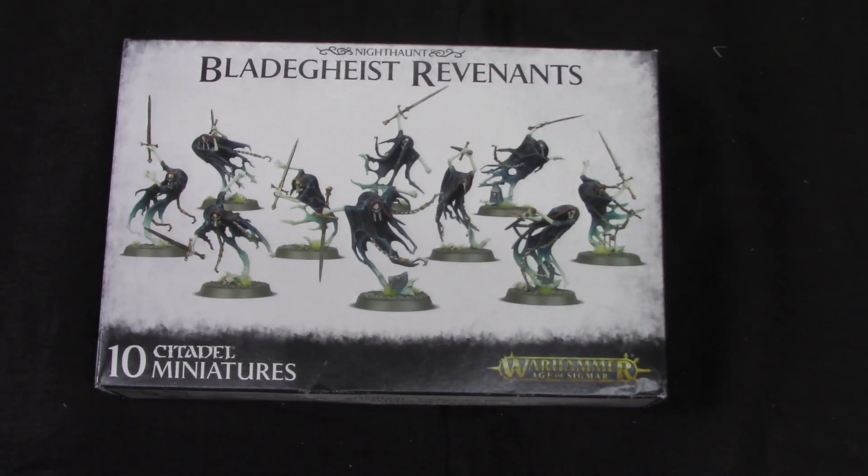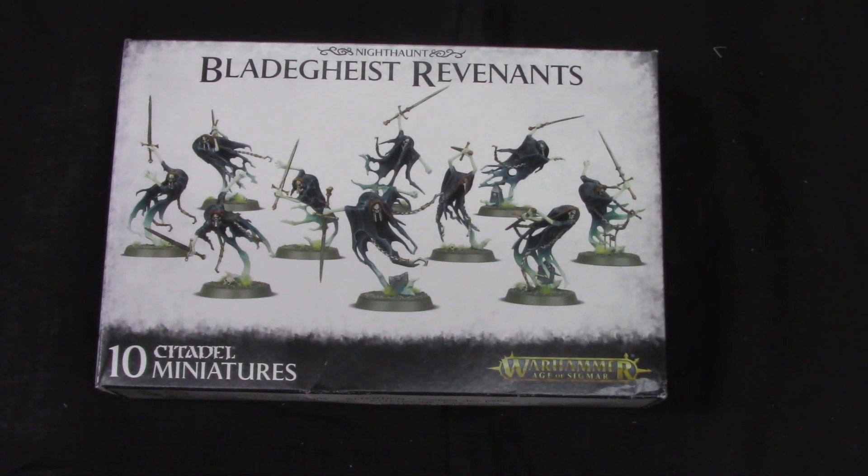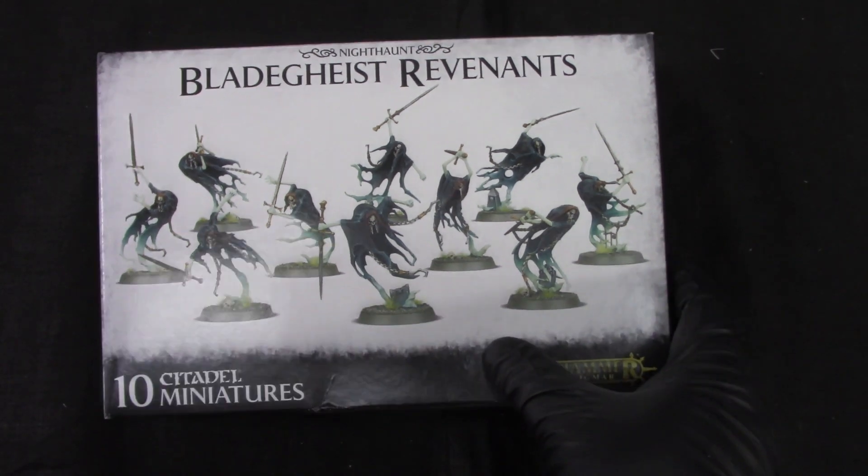Welcome to Grumpy Guy Gaming and this is an unboxing of Nighthound Blade Guy's Revenants. This box contains 10 Citadel miniatures and it's for Age of Sigmar. So let's see what we get inside the box.